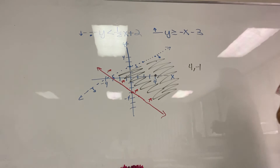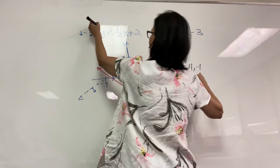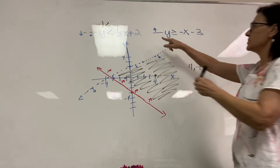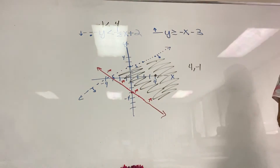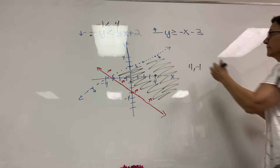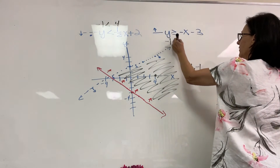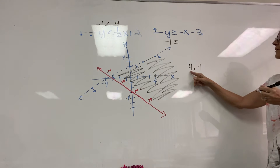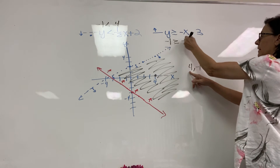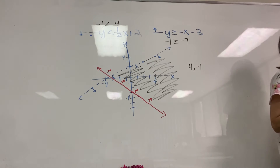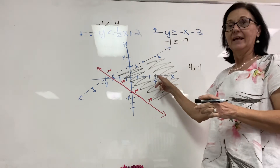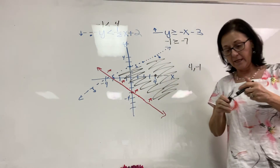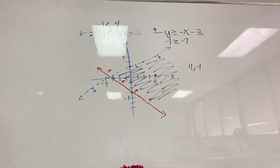Plugging in: when y is negative 1, is that less than one-half of 4 plus 2? One-half of 4 is 2, plus 2 is 4. Is negative 1 less than 4? Yes. For the second equation: is negative 1 greater than or equal to the opposite of 4 minus 3, which is negative 4 minus 3 equals negative 7? Yes, negative 1 is greater than negative 7. Both equations are satisfied, and any point in that shaded region would work.